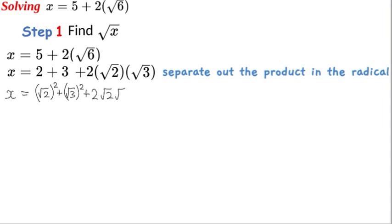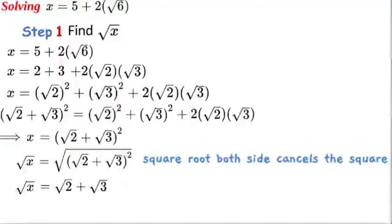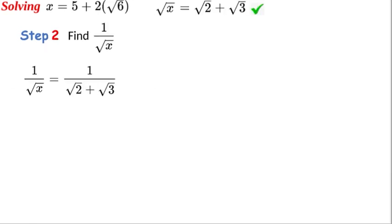Therefore we can square root both sides and put a square root here, and it will cancel the square. Therefore √x = √2 + √3, and that's the end of step one.